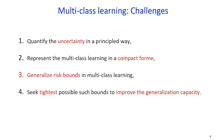We believe we have four main challenges. First, consider a more realistic multi-class setting by quantifying uncertainty in a principled way. Second, represent the multi-class learning in a compact form. Third, provide optimal risk bounds in multi-class learning. Fourth, seek the tightest possible such bounds.